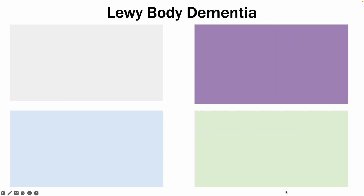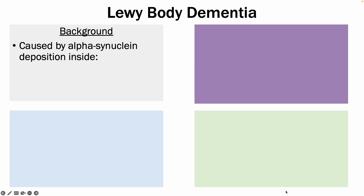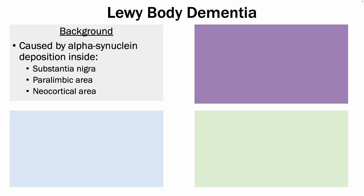Next is Lewy body dementia. It is caused by alpha-synuclein deposition inside the substantia nigra, the pyrolimbic area, and the neocortical area.